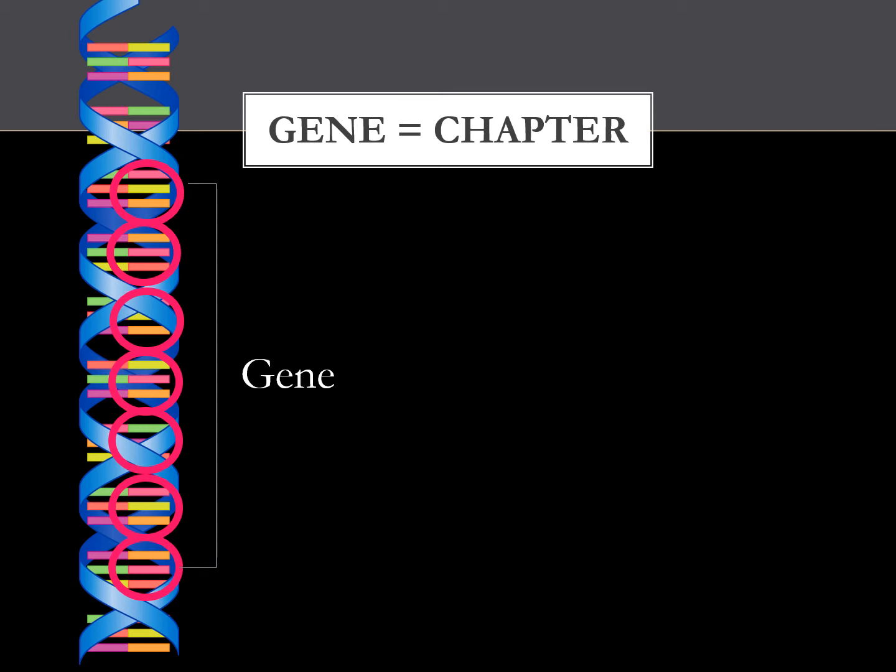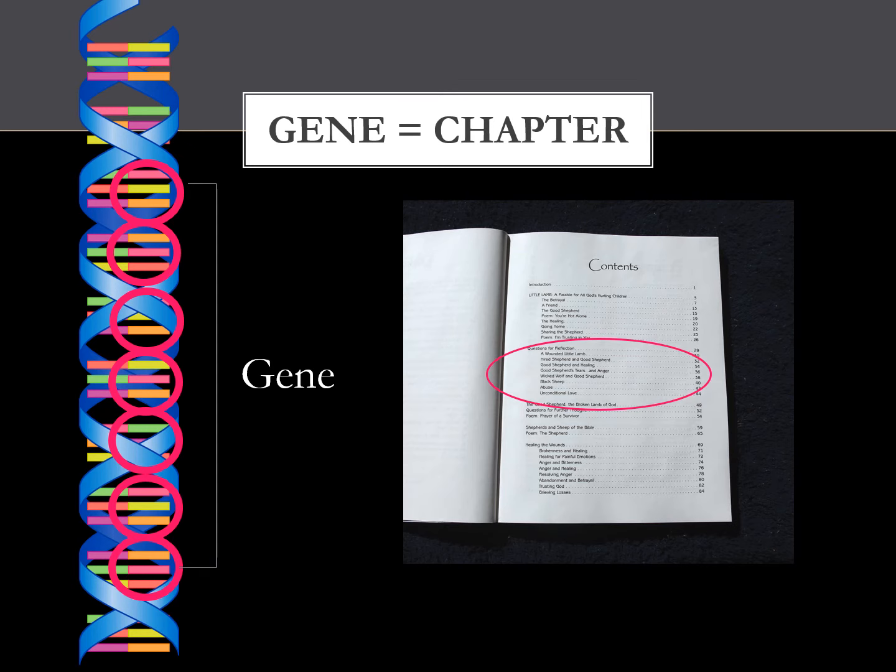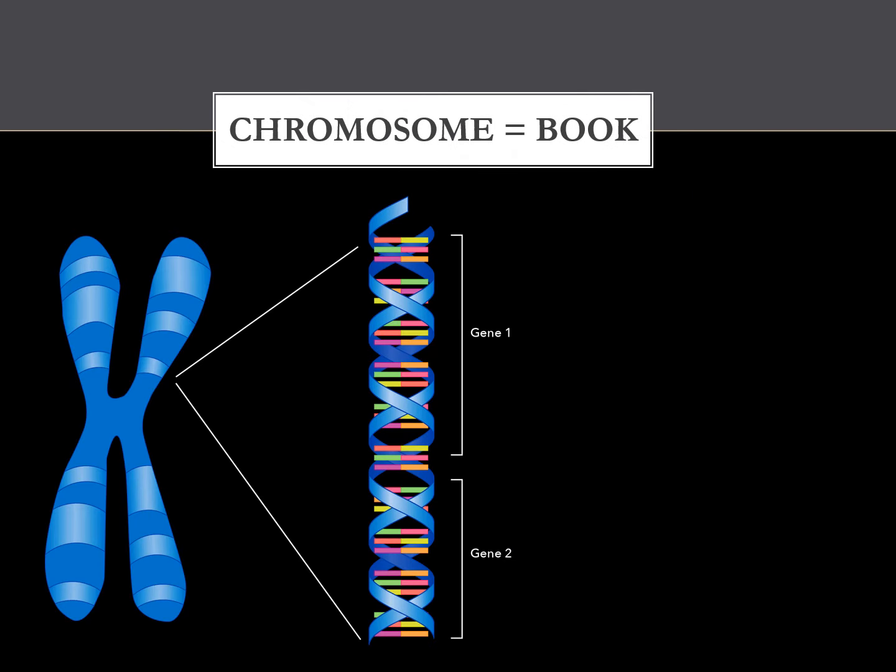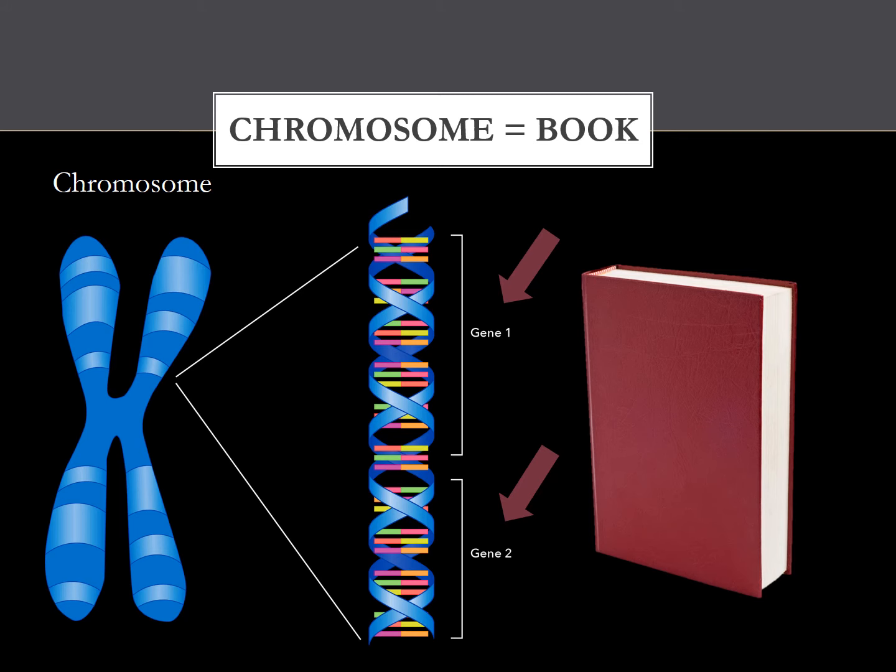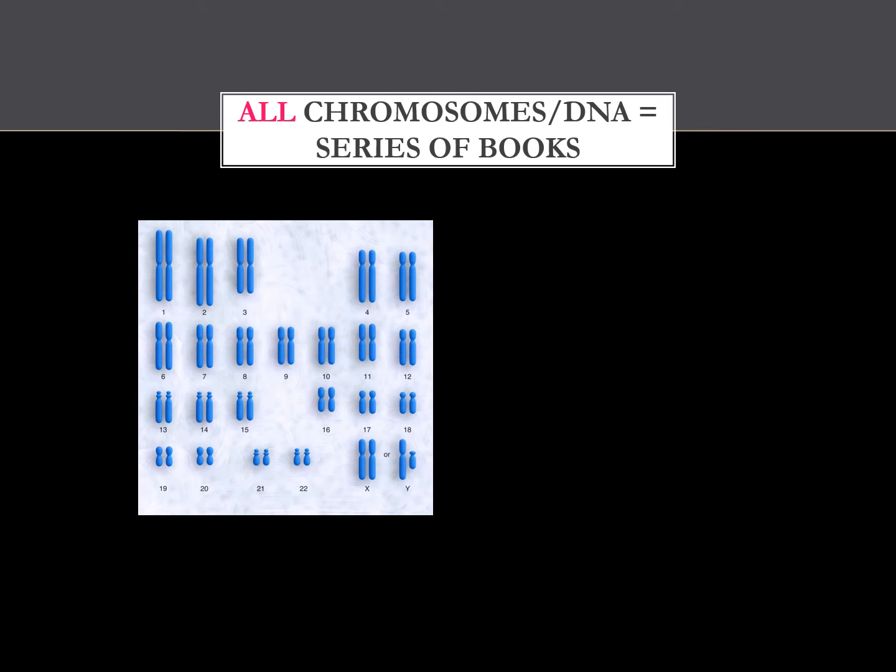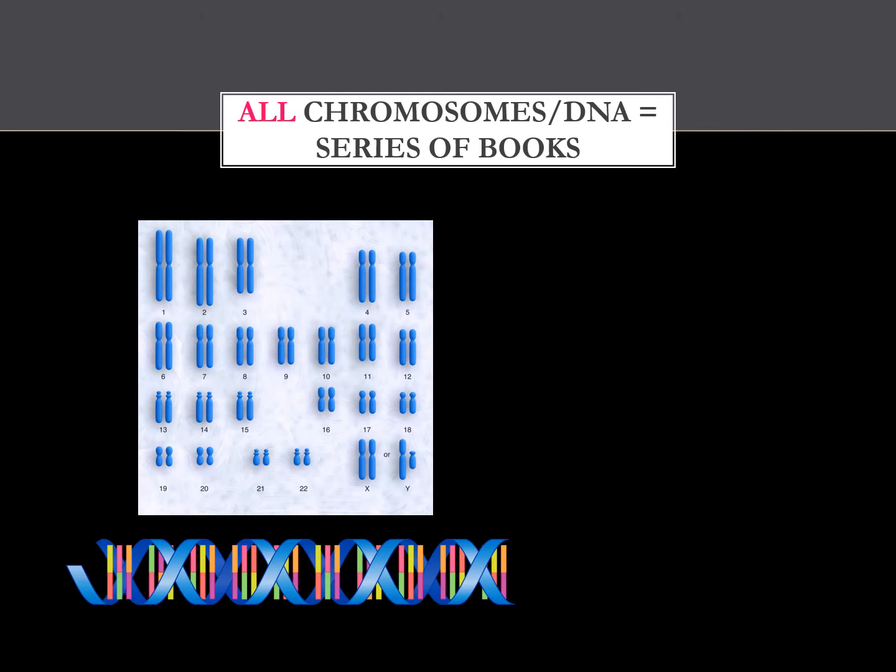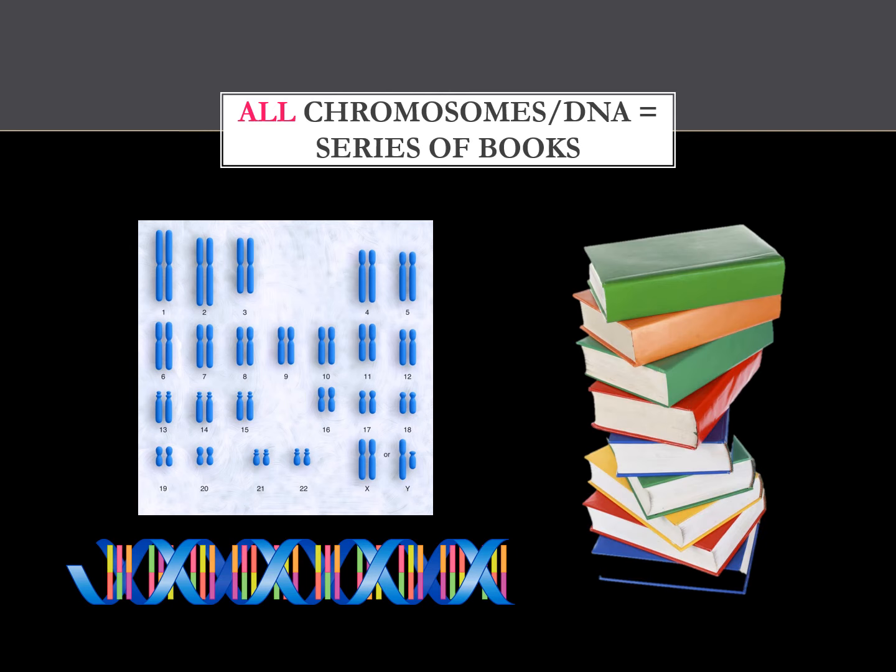If codons are like words, genes are like chapters in a book. A certain sequence of genes makes up a chromosome, which can be compared to a single book. All your chromosomes together, which means all your DNA, could be compared to a whole series of books.